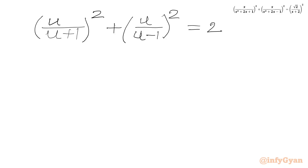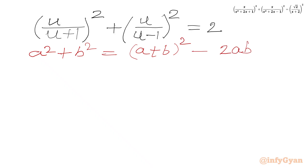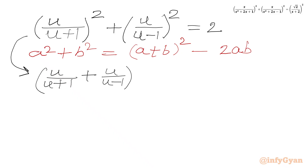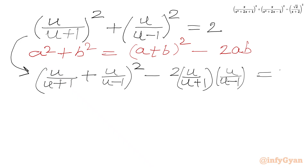So I can write our equation as u/(u+1)² plus u/(u-1)² equal to 2. Now I will use the algebraic identity a² plus b² equals (a+b)² minus 2ab. Here a is u/(u+1) and b is u/(u-1). So I can write the LHS as [u/(u+1) + u/(u-1)]² minus 2 times [u/(u+1)] times [u/(u-1)] equal to 2.